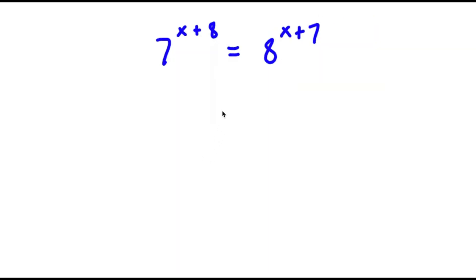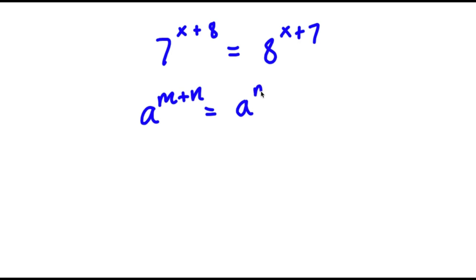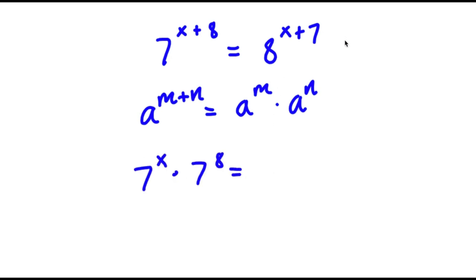In this problem, I have 7 to the power of x plus 8 is equal to 8 to the power of x plus 7. To start, if I have something in the form a to the power of m plus n, this is equal to a to the power of m times a to the power of n. So 7 to the power of x plus 8 equals 7 to the power of x times 7 to the power of 8, and 8 to the power of x plus 7 equals 8 to the power of x times 8 to the power of 7.